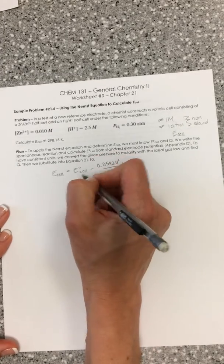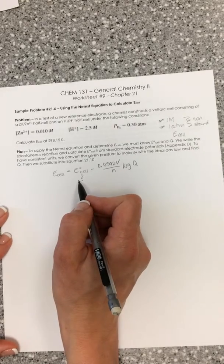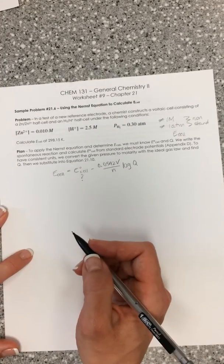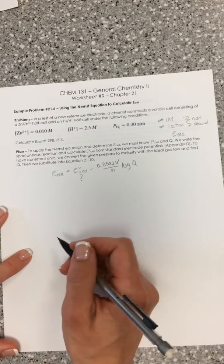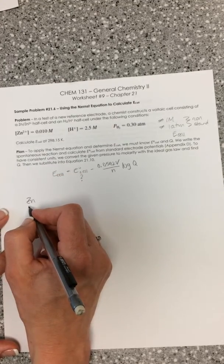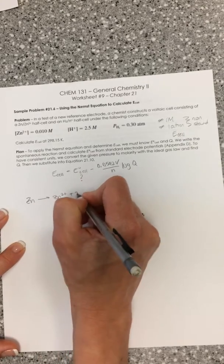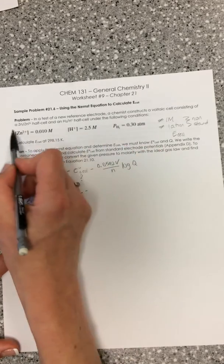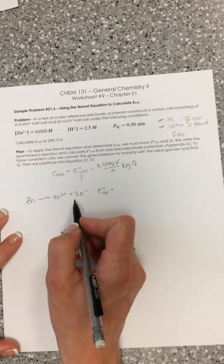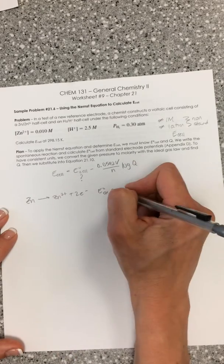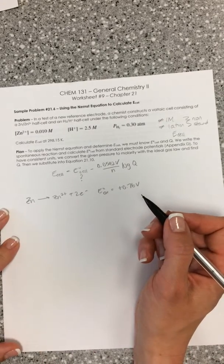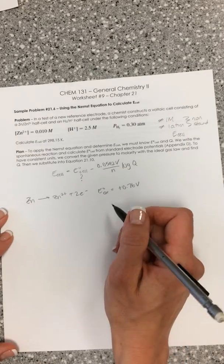Before we can proceed we need to figure out what E cell is. To figure out E cell, this is like earlier sample problems we had. We need to write our oxidation and our reduction reactions and sum up the standard potentials for each to get our E cell. Our zinc half cell is going to be our anode. We're going to have oxidation occurring. If we wrote zinc as a reduction, this would be minus. We want to flip this to be an oxidation so that this becomes a positive value. Zinc really likes to be oxidized. It likes to lose electrons.